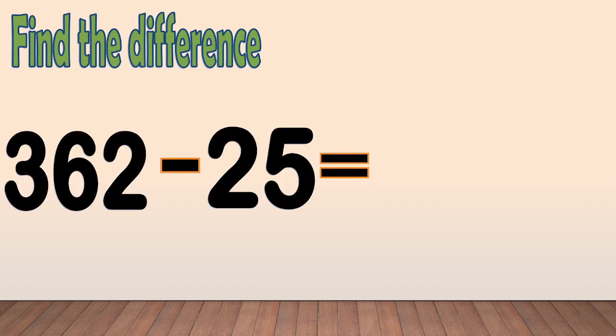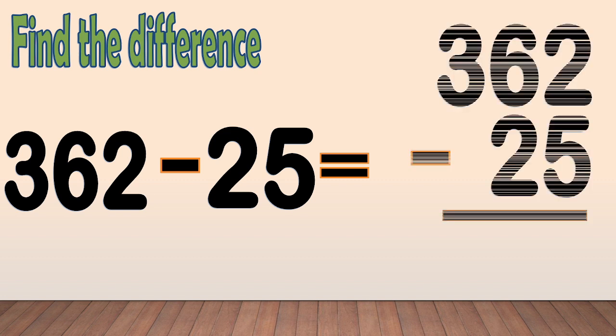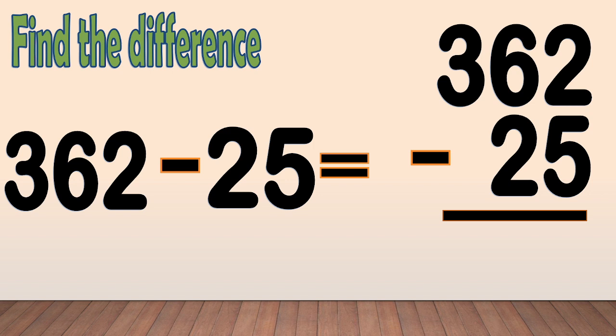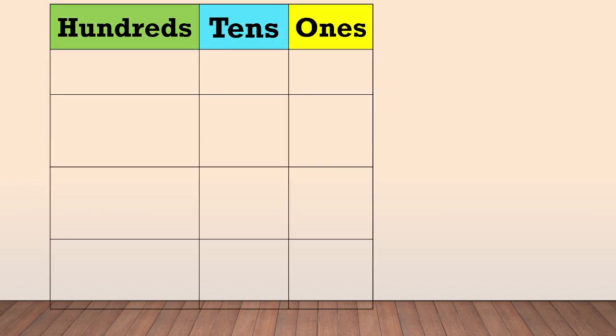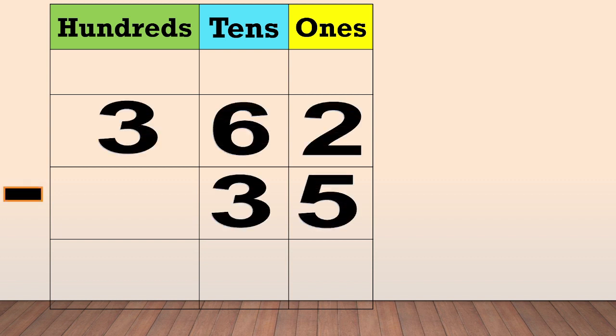Now, let's get started. Find the difference: 362 minus 35. Arrange the numbers in columns like this. Place the digit of the number in a column based on its place value: 362 minus 35.